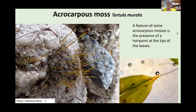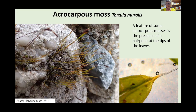Another feature that can point you towards an acrocarpous moss is a whitish appearance. When you look carefully at the leaves, the tips have a see-through hair point. A classic example is the really common moss Tortula muralis, which grows on every wall in every town and has this hoary, whitish look given by the hair point. Pleurocarpous mosses never have a hair point — they might have long drawn-out leaf points, but these contain chlorophyll, whereas the hair points in acrocarpous mosses are completely see-through with no chlorophyll.